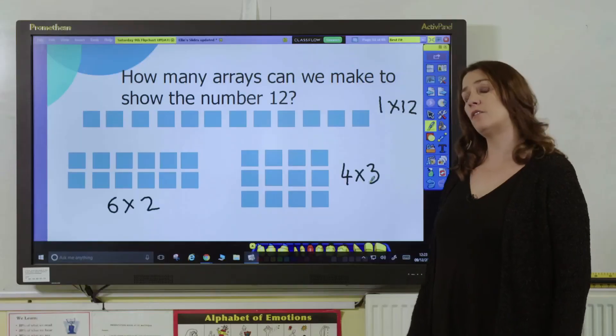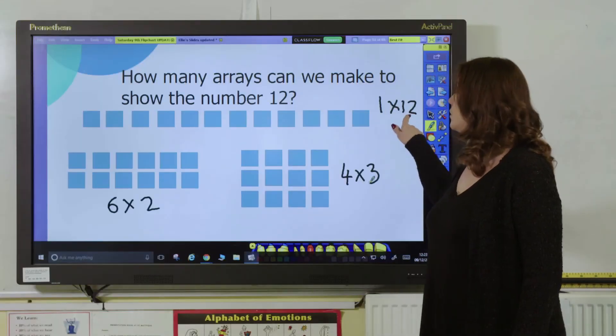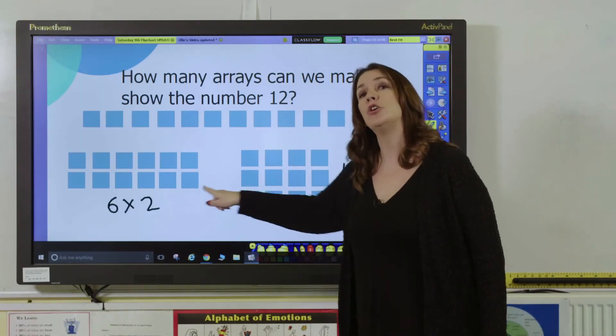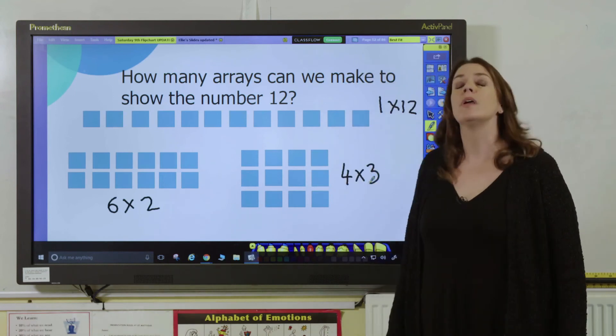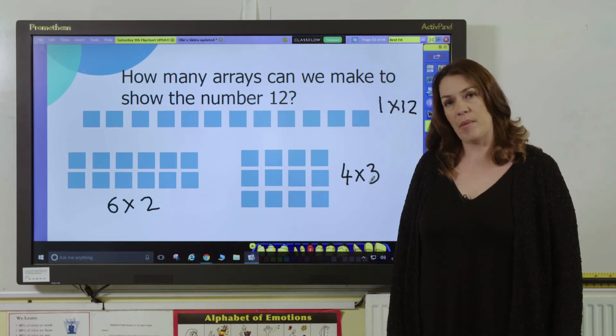So from this we can see that the factors of 12 are 1, 12, 6, 2, 3, and 4. So 12 is a composite number.